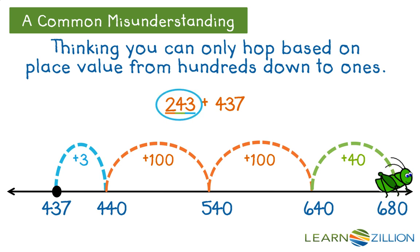My next hop would be plus 40, and I would land on 680. Even though I hopped in a different order, I still hopped 243 times, which led me to the correct answer, 680.